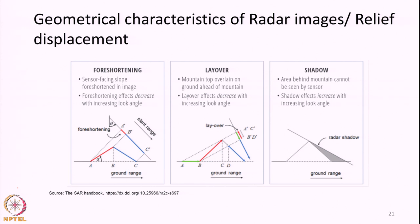Consider this in analogy with the distortions we discussed in optical remote sensing when we discussed about scanner elements like whisk broom scanners and push broom sensors. For whisk broom sensors, the IFOV keeps on increasing and it becomes coarser and coarser as the scanning angle increases, which causes image distortions. Similar concepts apply to radar remote sensing also.